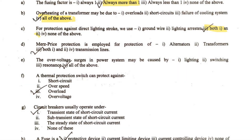The next question: Merz-Price protection is employed for protection of what? Merz-Price protection is basically the differential protection scheme. This type of protection scheme is generally used for the transformer as well as the alternator, protecting them against internal faults like inter-turn short circuits and other kinds of short circuits or arc faults. So option three — both one and two — is the correct answer, meaning Merz-Price protection is used for protecting both alternators and transformers.